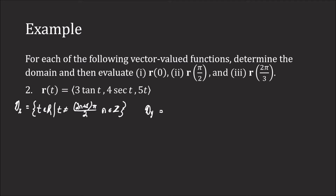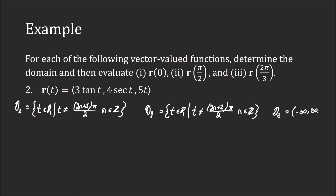The domain for the y component is the same, because secant is 1 over cosine. So it is also the set of all real numbers t such that t ≠ (2n+1)π/2 for integer n. The domain of the z component, 5t, is all real numbers. Therefore the domain of the vector-valued function is the set of all real numbers t such that t ≠ (2n+1)π/2 for integer n.